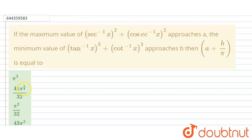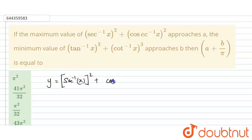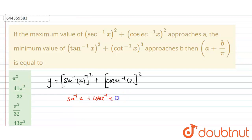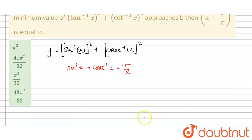Let's move to the answer. For the first condition, let y = (sec⁻¹x)² + (csc⁻¹x)². We know the inverse identity formula: sec⁻¹x + csc⁻¹x = π/2. I'm going to use this formula to substitute here.